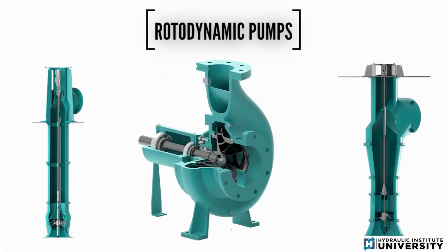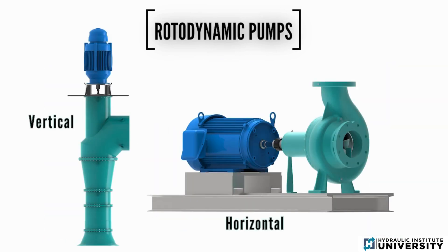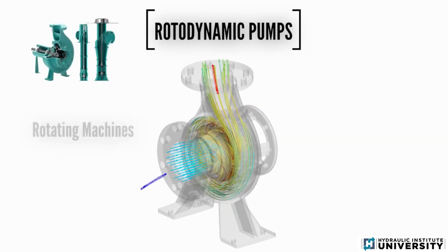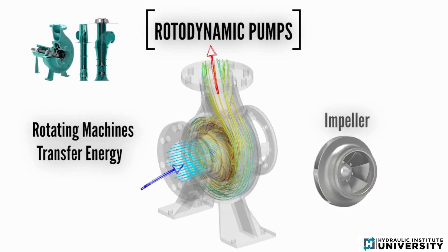Rotodynamic pumps are the most common type, accounting for approximately 80% of the pumps installed and can be vertical or horizontal. They are rotating machines that transfer energy to the pumped fluid through a rotating impeller.